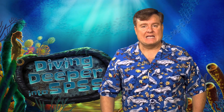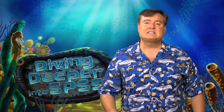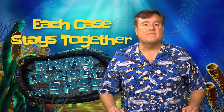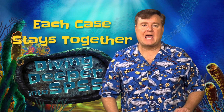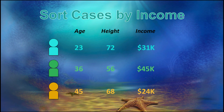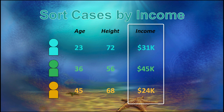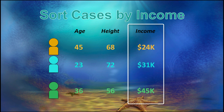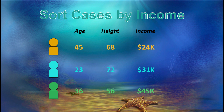When you sort data, all of the data in the data set will be sorted based on a single variable, but the information in each case will stay together. For example, if we have three people each with a different measure for age, height, and income, and we sort the income variable from smallest to largest, each person's data from the other variables stays with them.